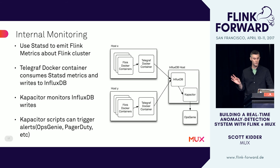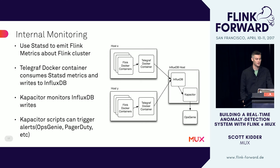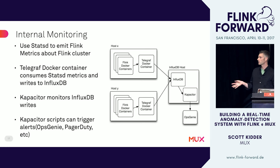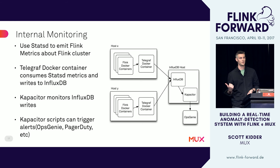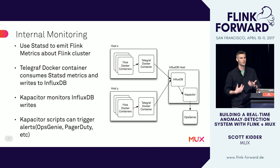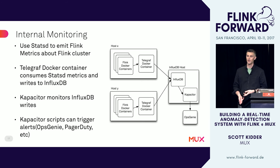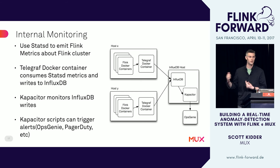For internal monitoring: we use StatsD to emit Flink metrics about our cluster using the built-in StatsD monitor, and it works great. We run a Telegraf Docker container alongside all our other Docker containers. Telegraf consumes those StatsD metrics and writes them to InfluxDB. We then have a Capacitor instance monitoring all metrics written to InfluxDB, and if something indicates the presence of a problem or simply the absence of metrics, Capacitor will alert us via Opsgenie.